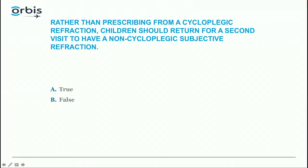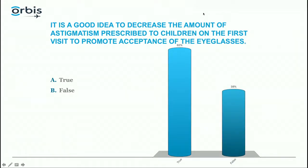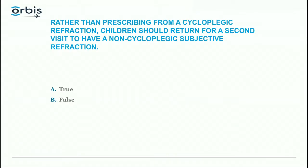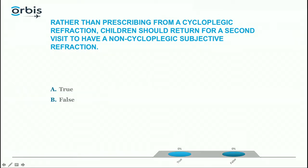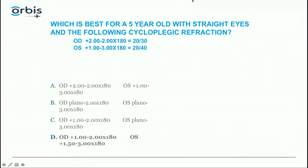Second pre-question: true or false — rather than prescribing from a cycloplegic refraction, children should return for a second visit to have a non-cycloplegic subjective refraction. Third: which prescription is best for a five-year-old with straight eyes and the following cycloplegic refraction?